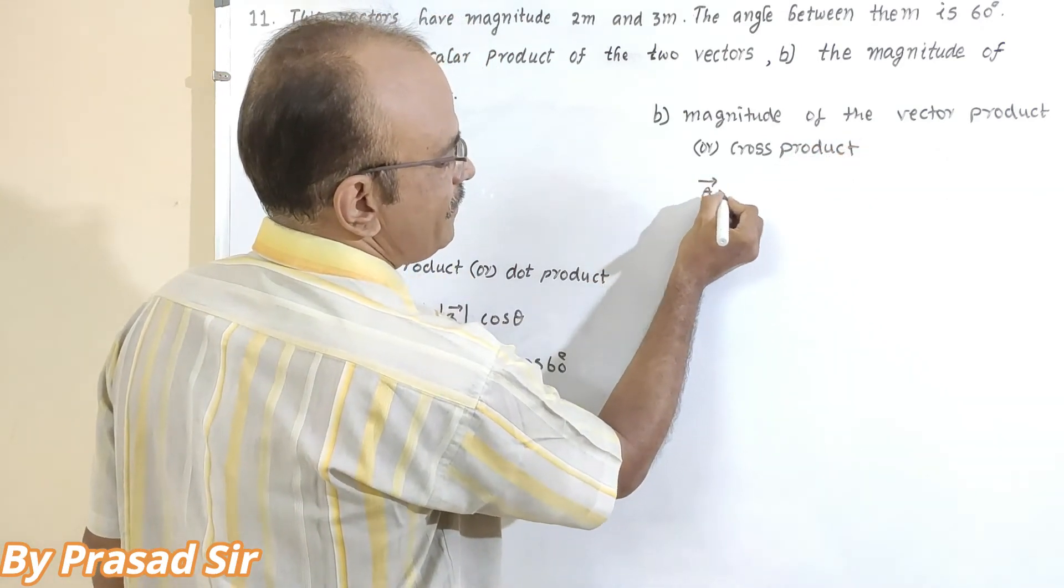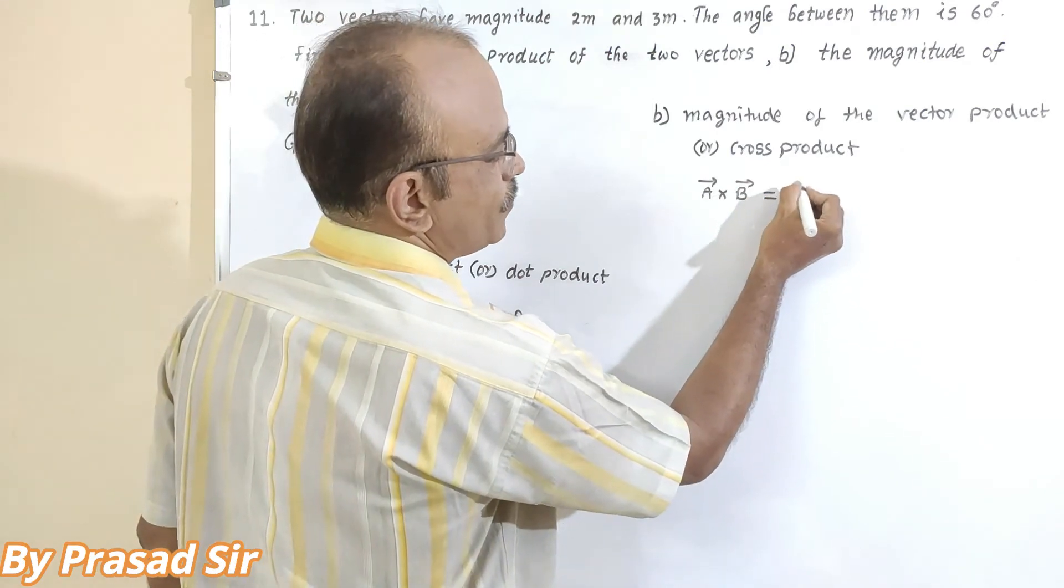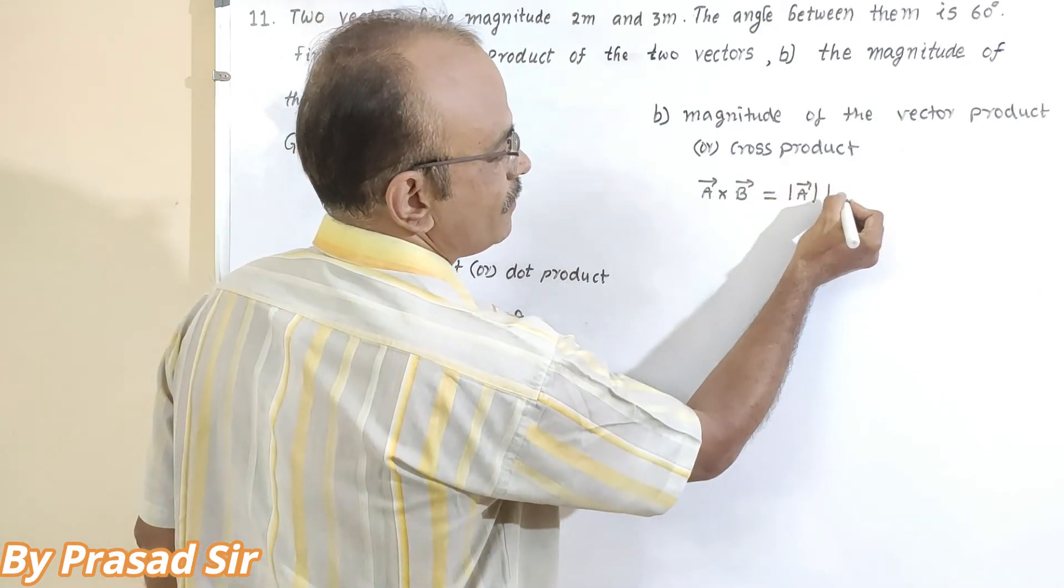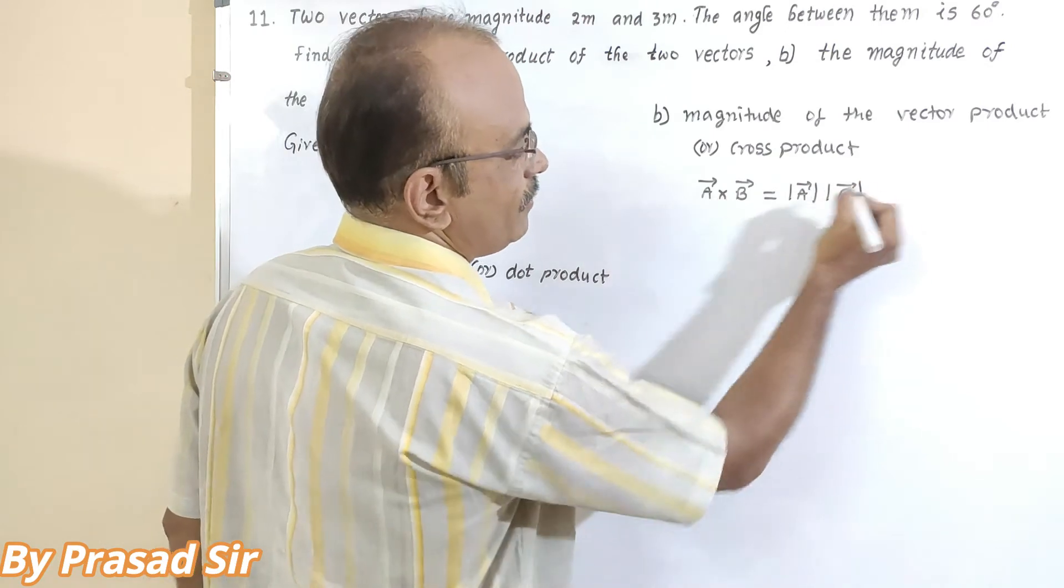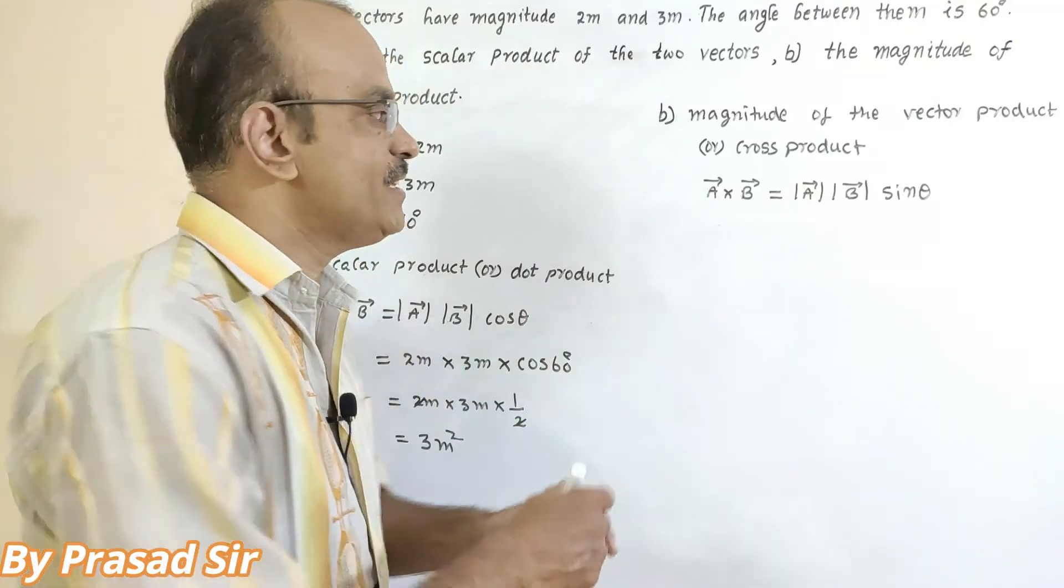So now, A vector cross B vector is equal to A vector and B vector into sin theta. Now to answer this one, substituting here...